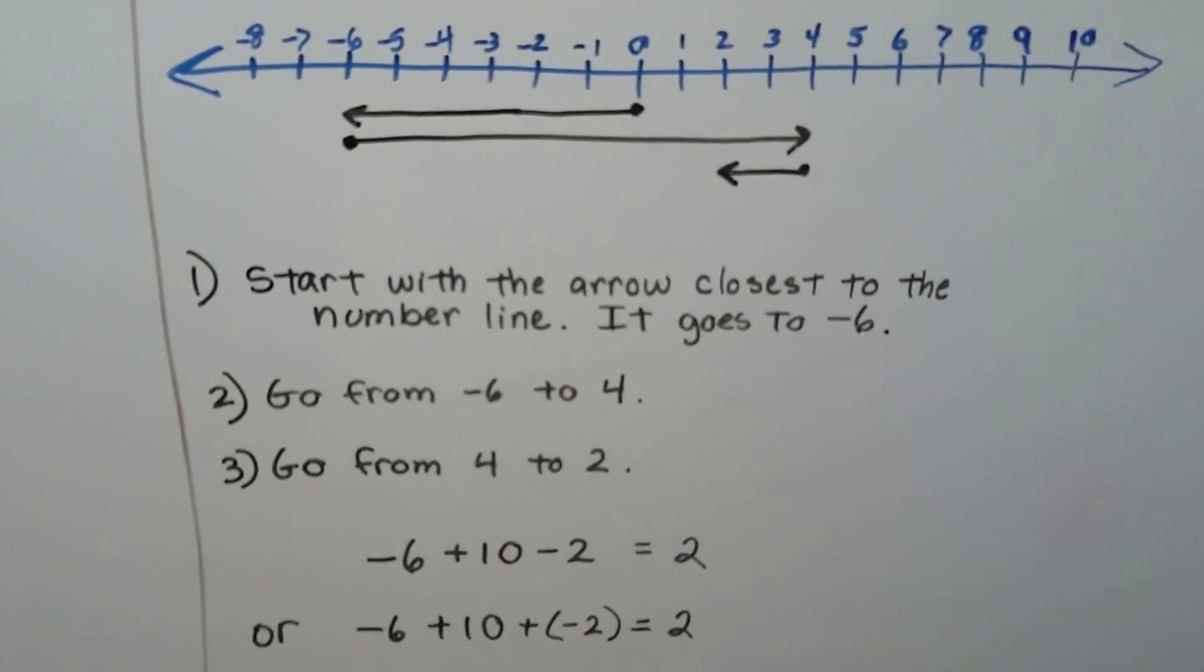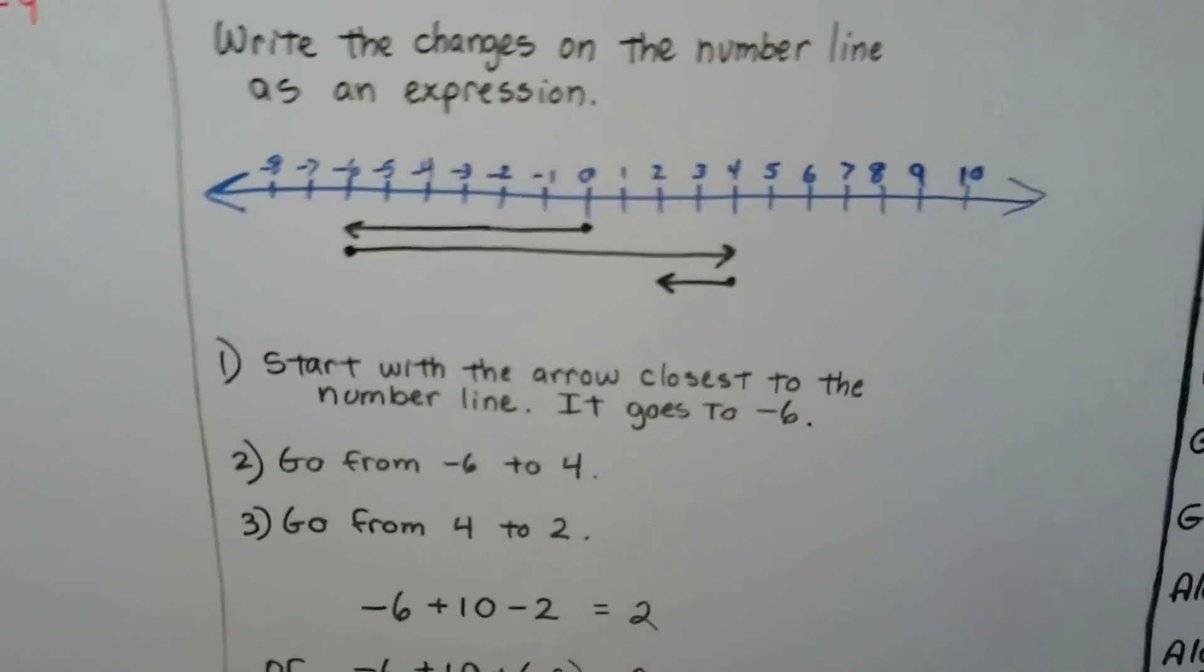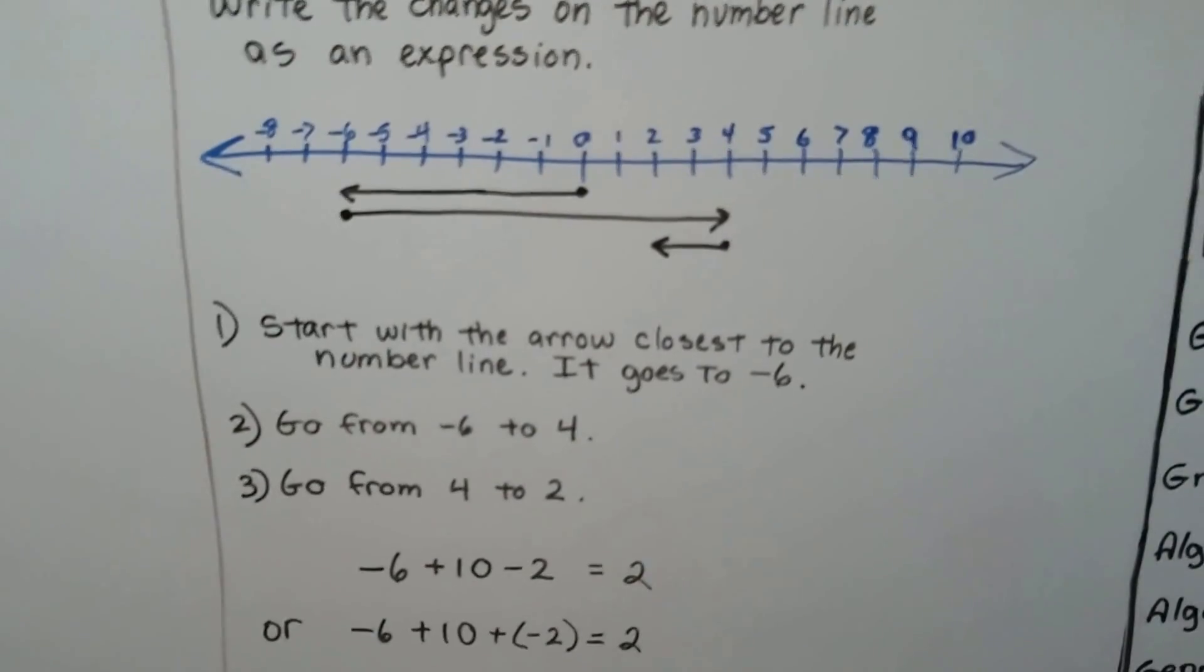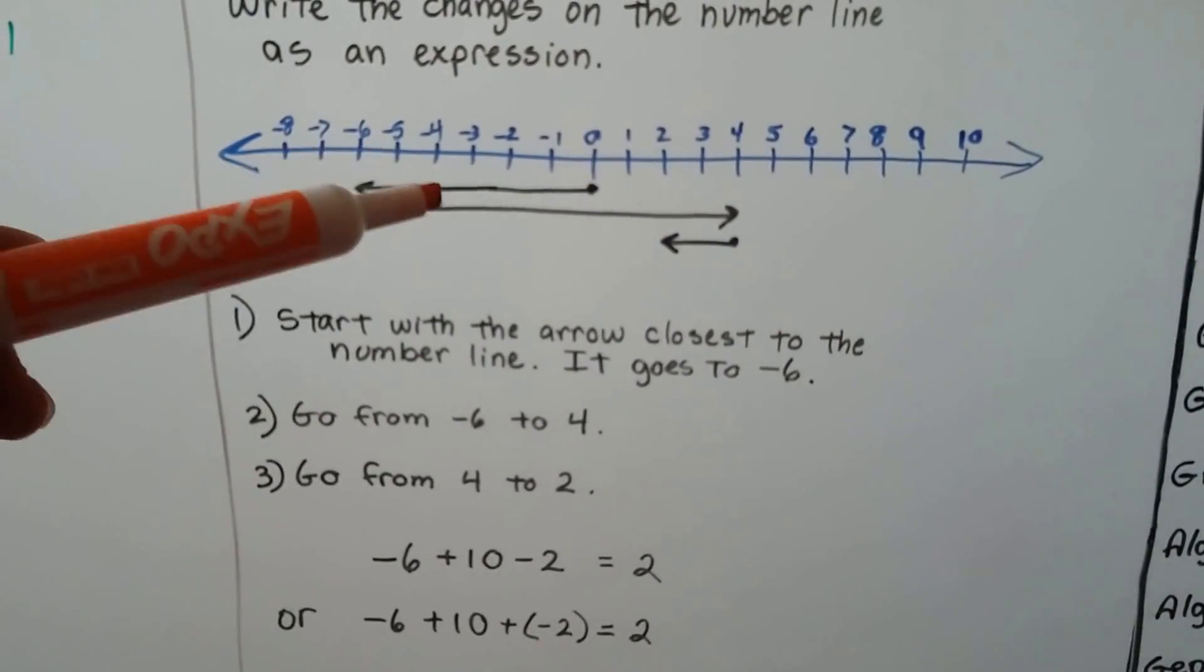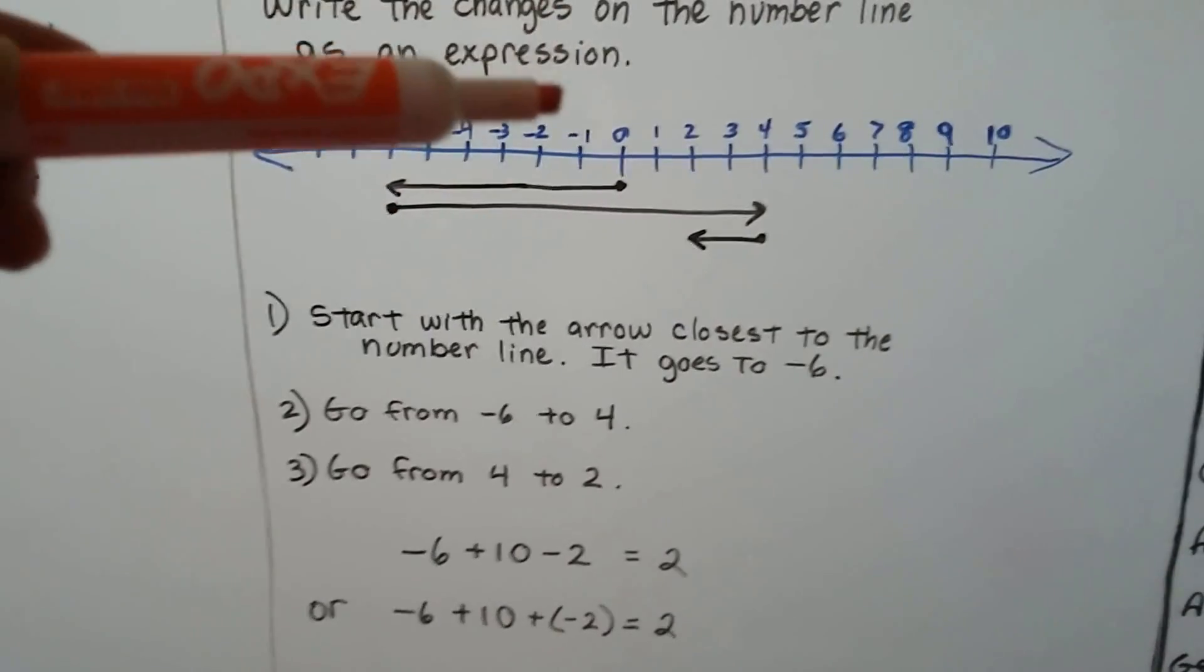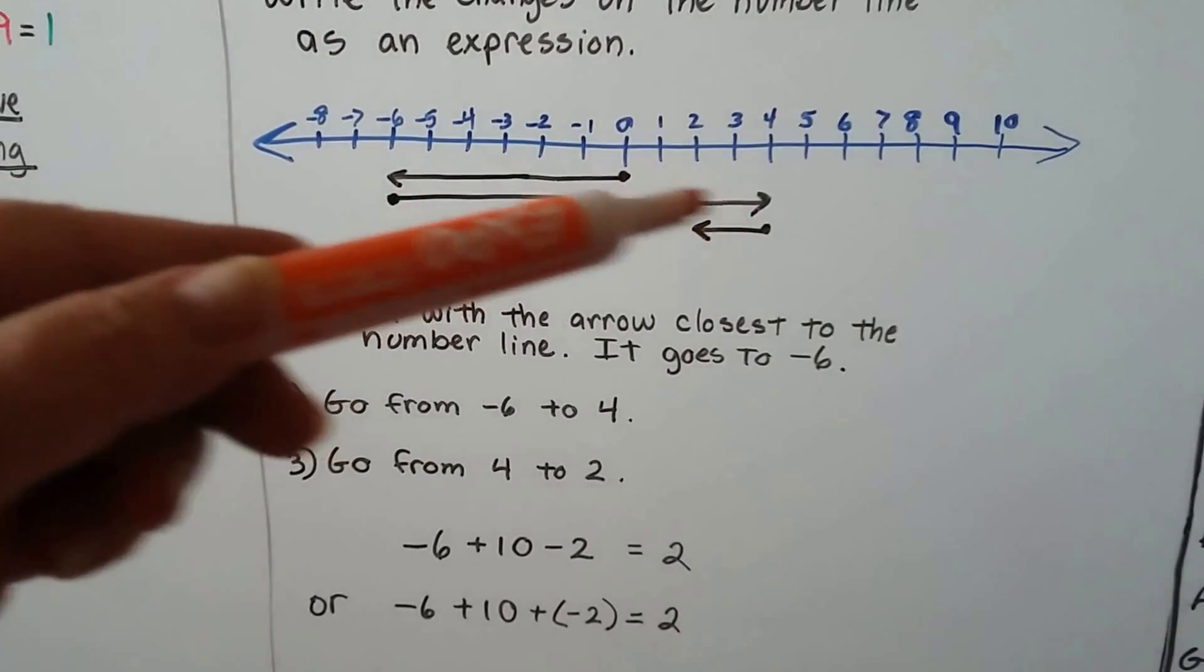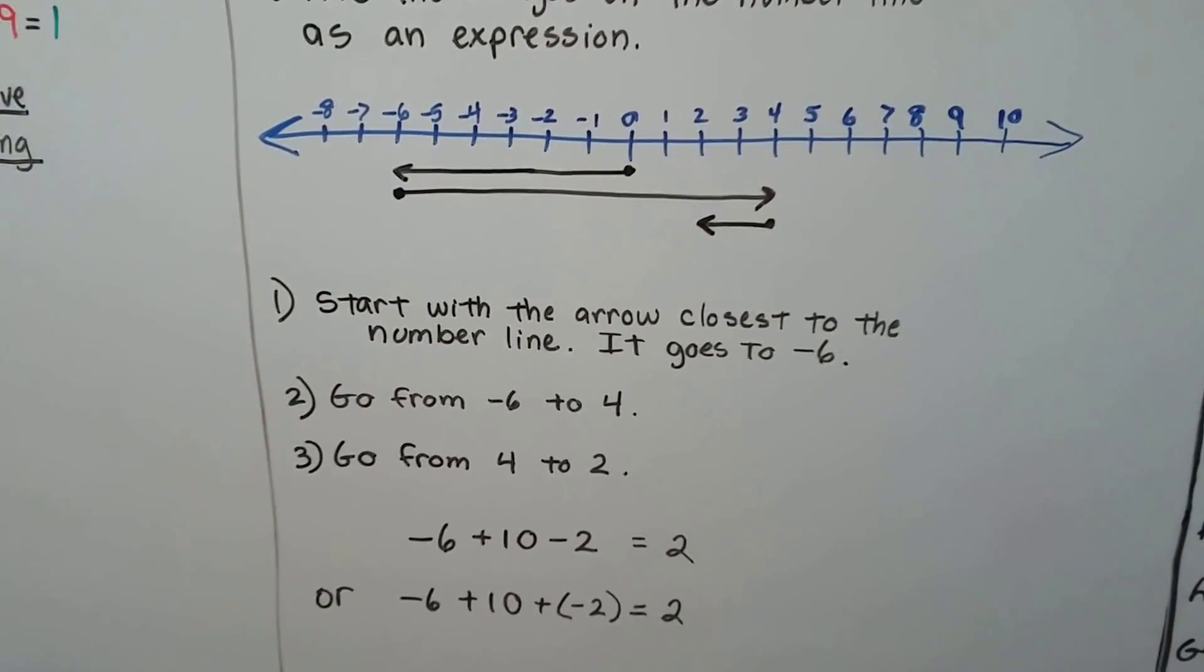So you're going to come across problems like this in the GED math book, and you should be able to figure them out now. Just remember, you start with the one that's closest to the number line, and they might be on top, but just start with the one closest to the number line, then go to the next one, to figure out which direction it's pointing, and how many hops it made.